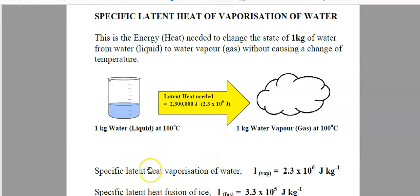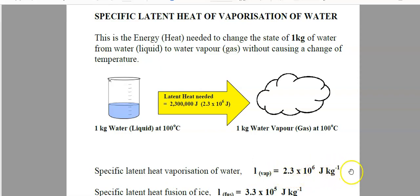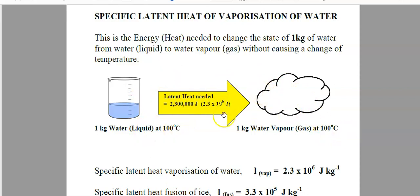It's often written like this. The vaporization of water, L_VAP, is 2.3 × 10⁶ joules per kilogram. You notice there is no per degree there because we are not seeing a change of temperature in this change.